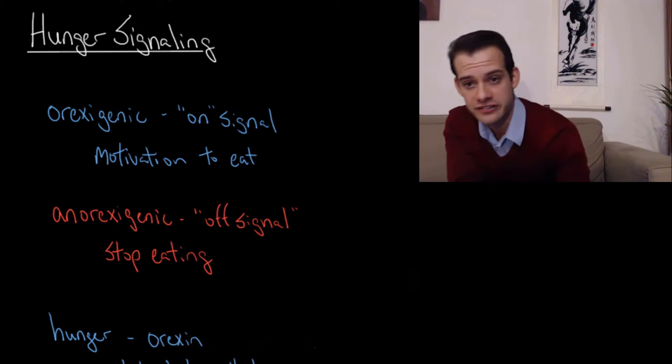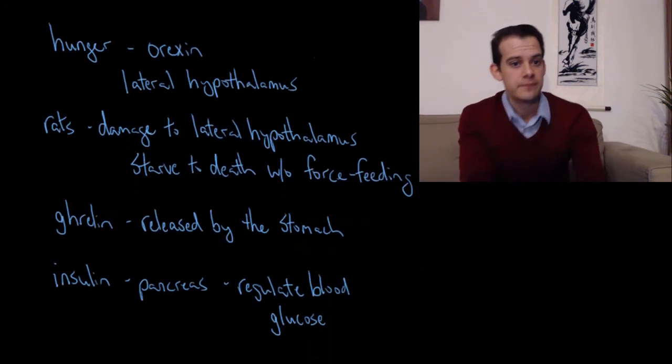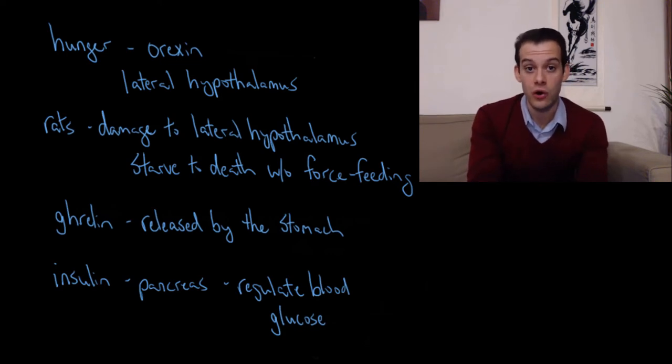So let's look at the on signal in more detail. This hunger signal is triggered in part by the release of a hormone called orexigen, and this is released by the activity of neurons in the lateral hypothalamus. So this is an area of the hypothalamus, and one way that we can see the role of the lateral hypothalamus on the release of orexigen and then on hunger signaling is in rats who have lesions to their lateral hypothalamus.